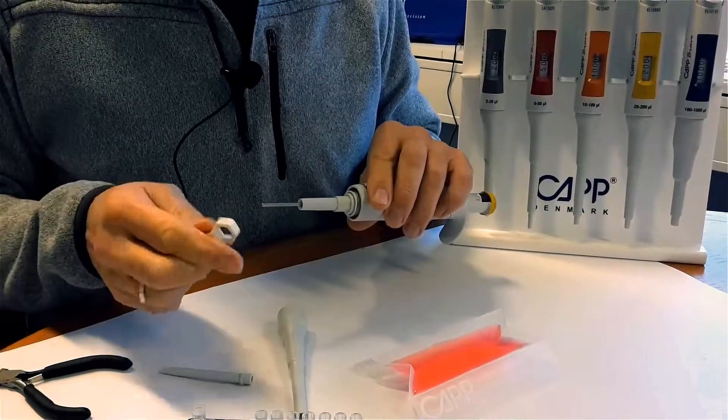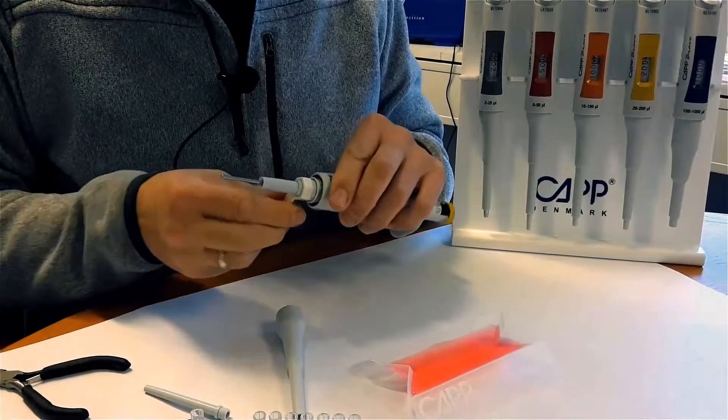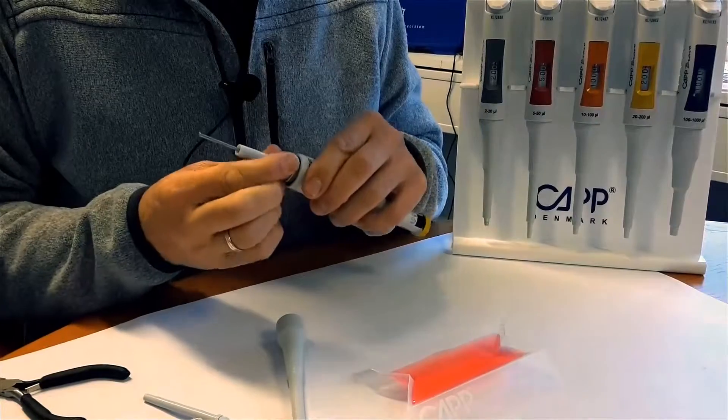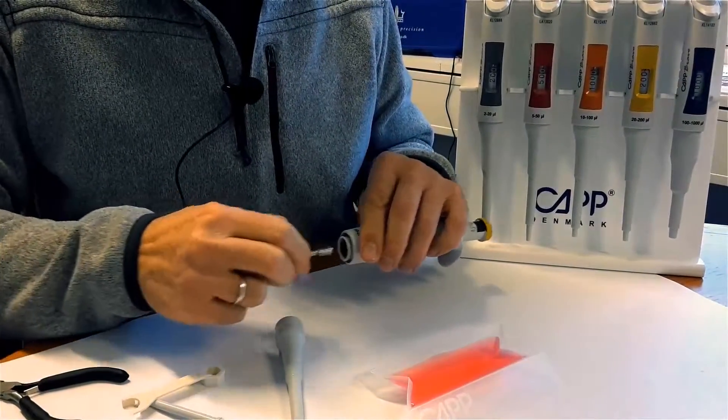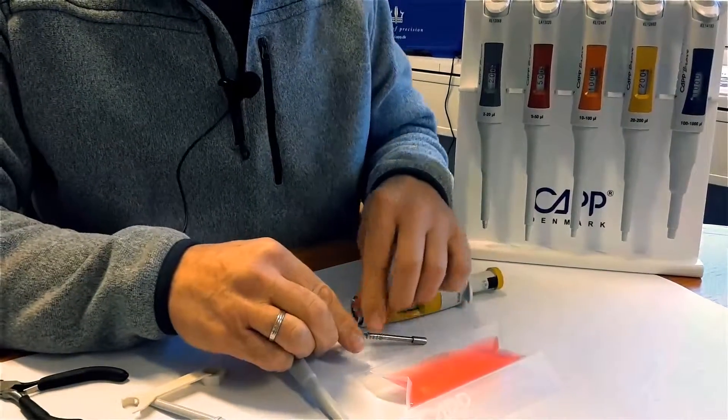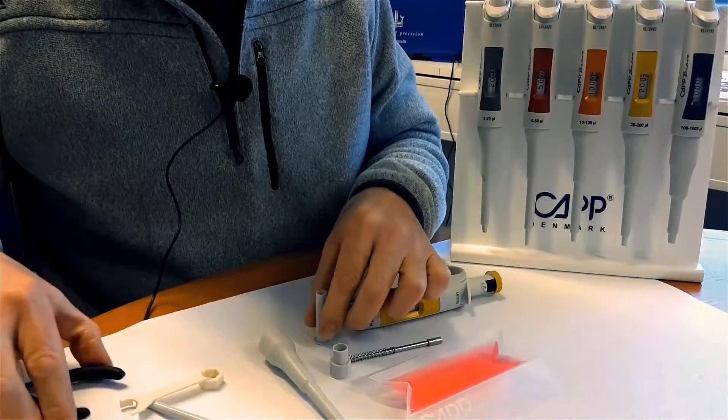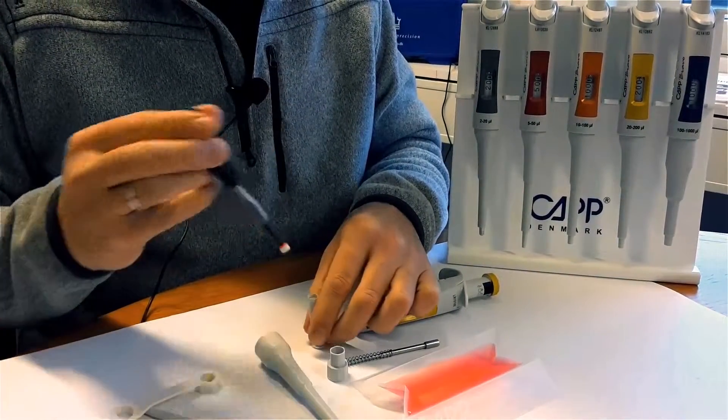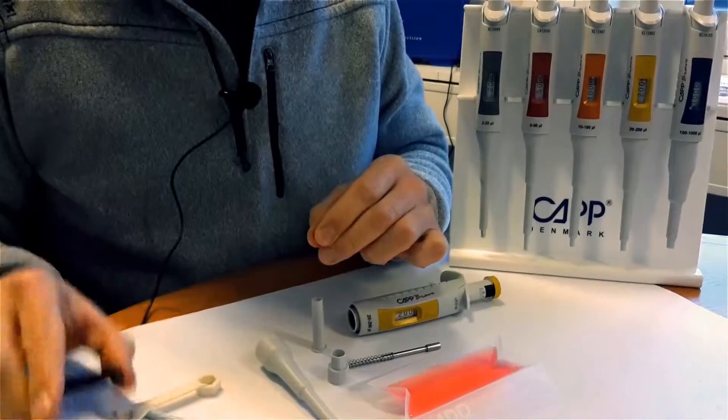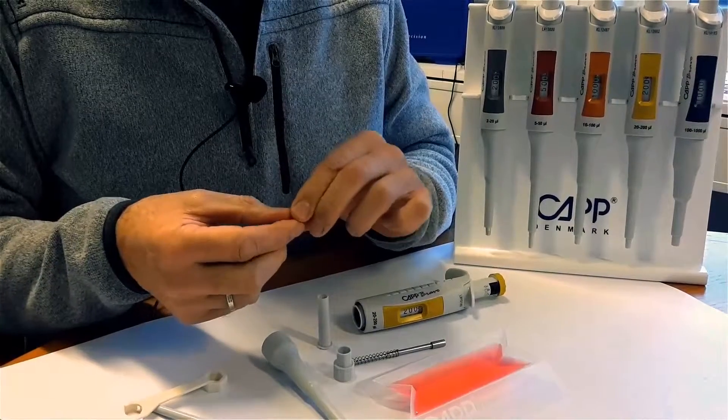Use a spanner to disassemble the tip cone upper part and a pin set to remove the seal and o-ring. Check for visual damages and replace any worn or damaged parts.